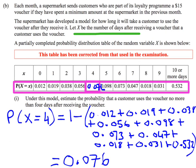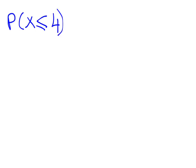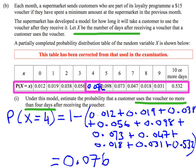Now let's look at the question. We want to estimate the probability that they use the voucher no more than 4 days after receiving it. Let's think about what "no more than" means in probability — it can't be bigger than 4, it can be smaller or equal. So what we actually want to find is the probability that X is less than or equal to 4.